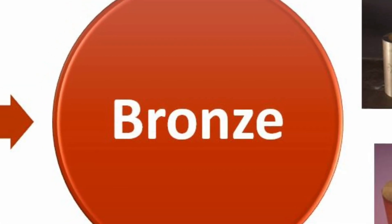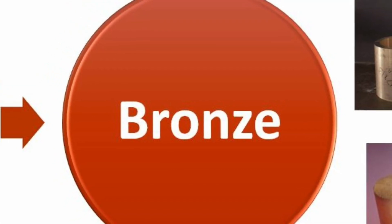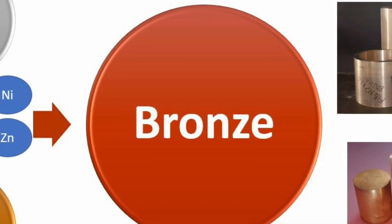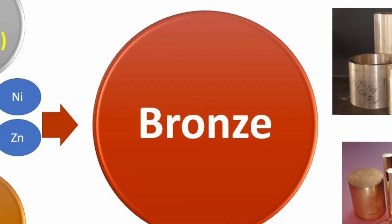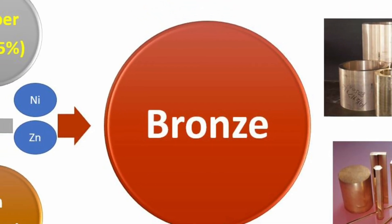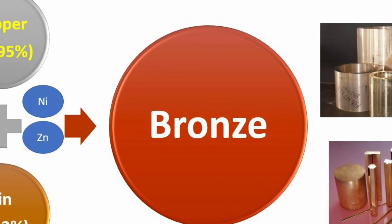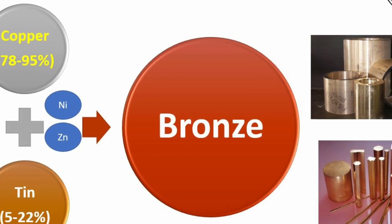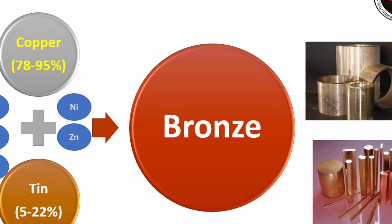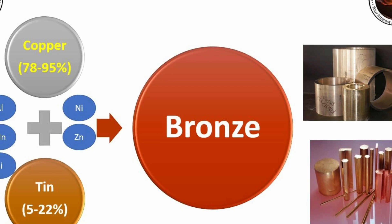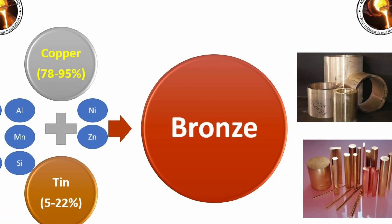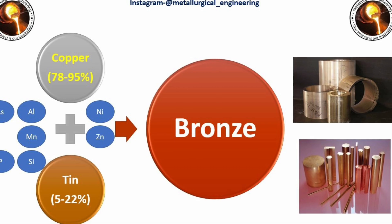Third in the list is bronze. It is a copper-based alloy and tin is the main alloying element. Other alloying elements are arsenic, aluminum, manganese, silicon, nickel, and zinc. The composition of bronze is 78 to 95 percent copper and 5 to 22 percent tin. It is used in instruments, guitar strings, and medals.